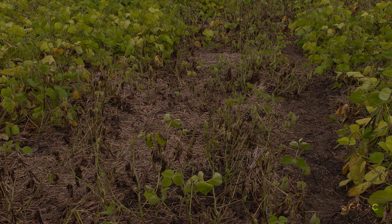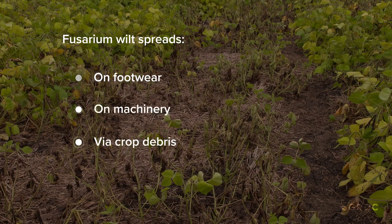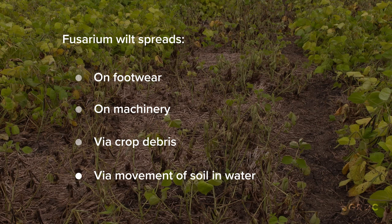The disease can spread from paddock to paddock or farm to farm through movement of infected soil — on footwear, on machinery, or through crop debris moving around. The disease can also move from an infected paddock to a healthy one through the movement of soil in water, whether that's irrigation water or floodwater.